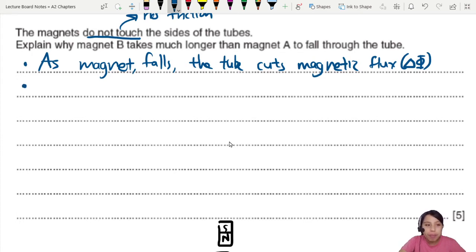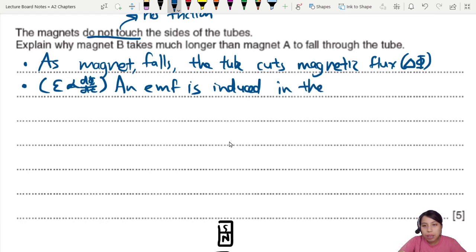Faraday's law, bring that in. So talking about Faraday's law, E is proportional to change in flux or rate of change in flux. So you can say an EMF is induced. Induced where? In the metal tube. Oh, then you say, okay, EMF is induced in the aluminum tube. And that is what you can say.